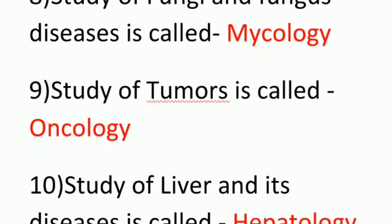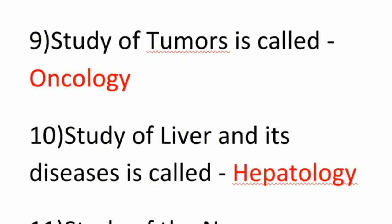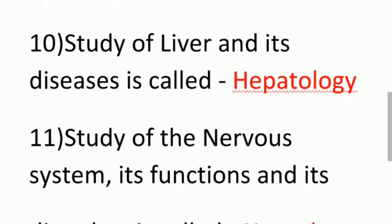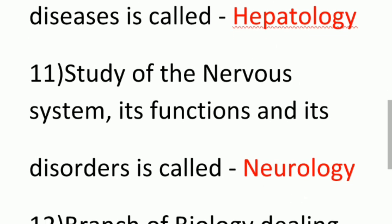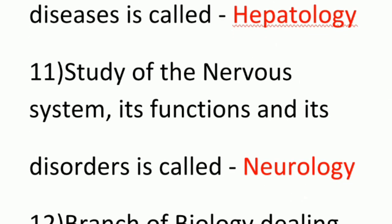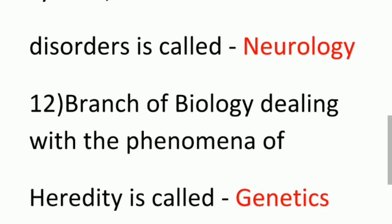Study of the liver and its diseases is called Hepatology. Study of the nervous system is called Neurology. The branch of biology dealing with the phenomenon of heredity — genes — is called Genetics.